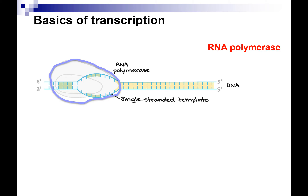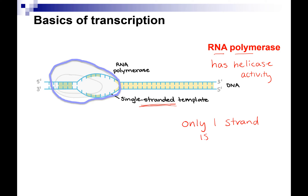The enzyme that does transcription is called RNA polymerase. We had DNA polymerase that makes DNA; we have RNA polymerase that makes strands of RNA. RNA polymerase has its own helicase activity, so it can actually open up and unwind the DNA to make a single-stranded template, because you can't copy double-stranded DNA since it's all base-paired. So you have to open it up and only one strand is copied for one gene.